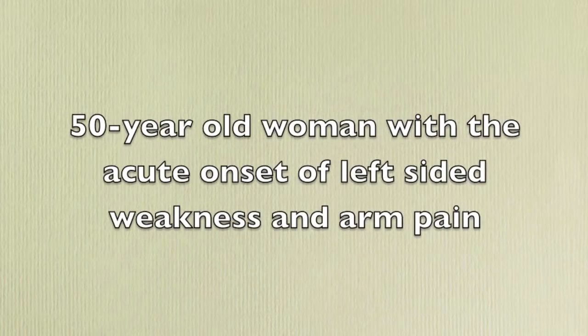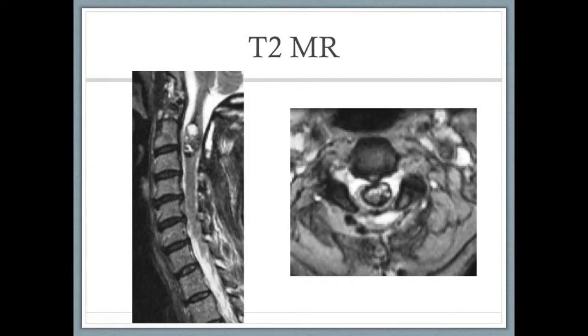The patient is a 50-year-old woman with the acute onset of left-sided weakness and arm pain. T2-weighted cervical MR shows typical mixed signal intensity with surrounding rim of decreased signal intensity, consistent with the diagnosis of a large intramedullary cavernous malformation at the C2 level.